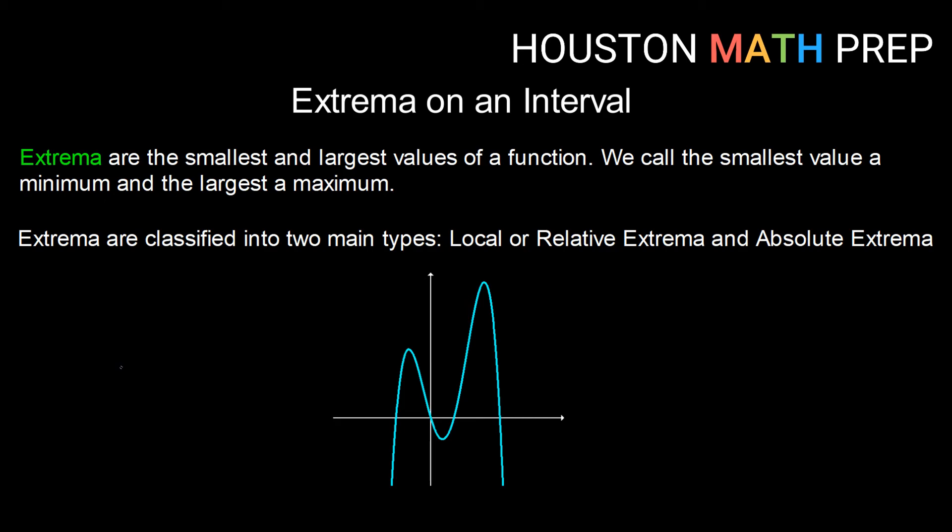Extrema are the smallest and largest values of a function. Often we call them the extreme values — the biggest and the smallest. The smallest value is called a minimum and the largest value is called a maximum. We generally classify extrema into two main types: local or sometimes called relative extrema, and absolute extrema.